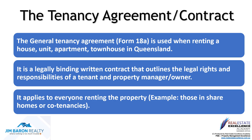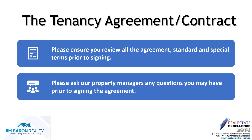The Form 18A is a legally binding contract between yourself and the property owner. Our agency manages the property on behalf of the lessor. The General Tenancy Agreement is used when renting a house, unit, apartment, or townhouse in Queensland. It is a legally binding written contract that outlines the legal rights and responsibilities of the tenant, the property owner, and our agency on behalf of the owner. The Form 18A is made up of standard terms, which are the law and non-negotiable, and also special terms.